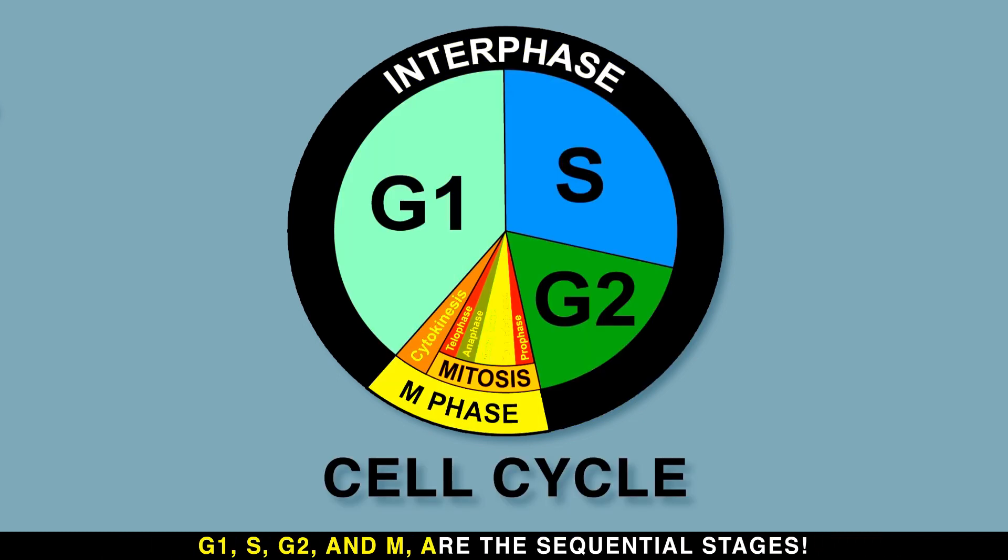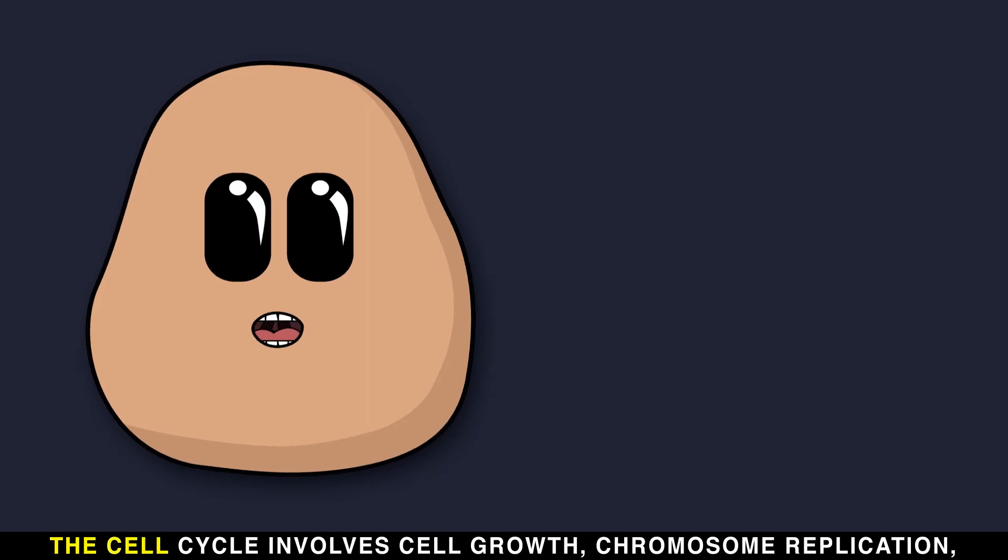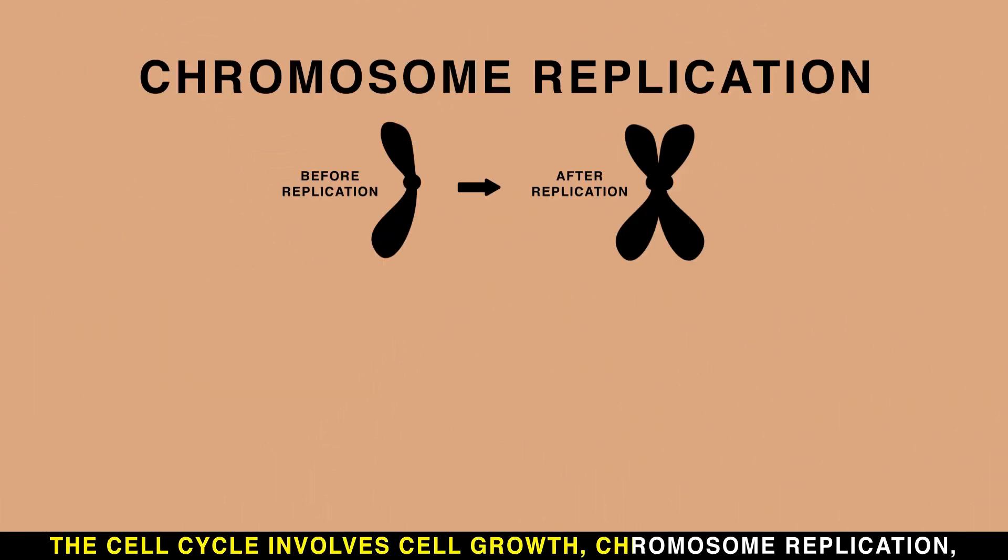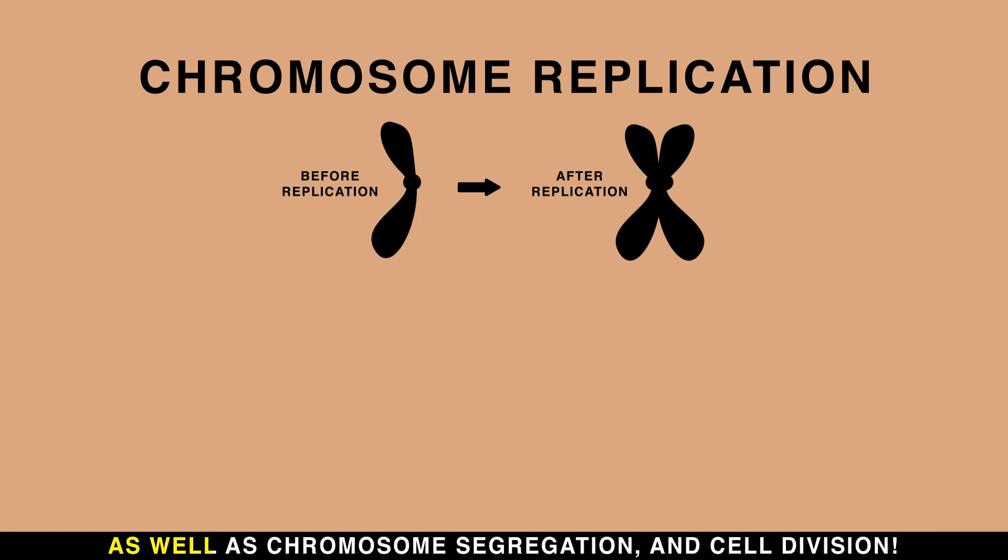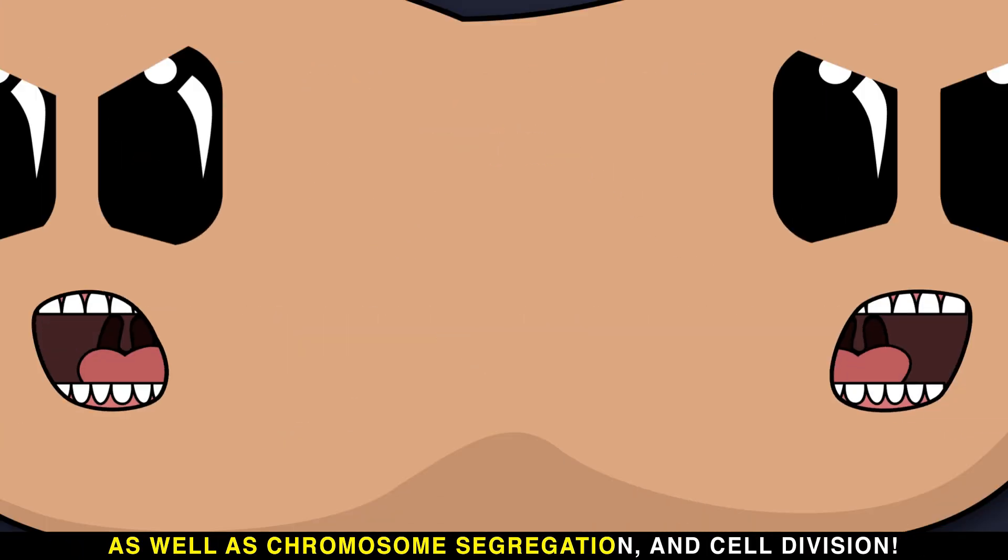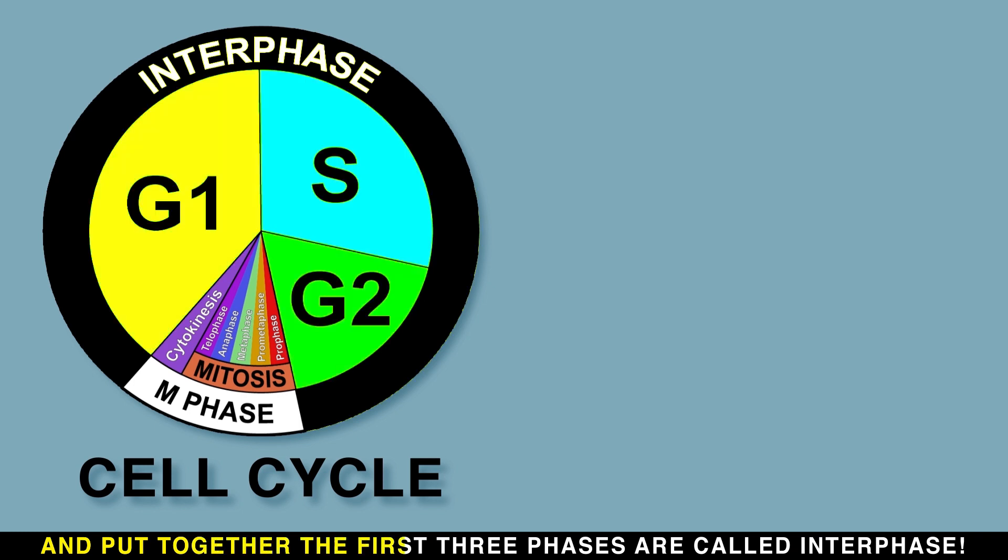G1, S, G2, and M are the sequential stages. The cell cycle involves cell growth, chromosome replication, as well as chromosome segregation and cell division. Put together, the first three phases are called interphase.